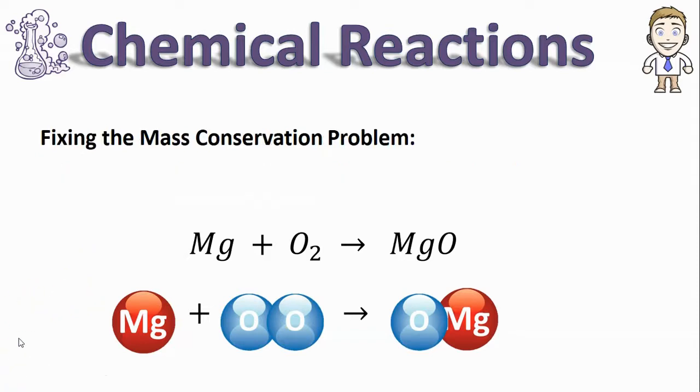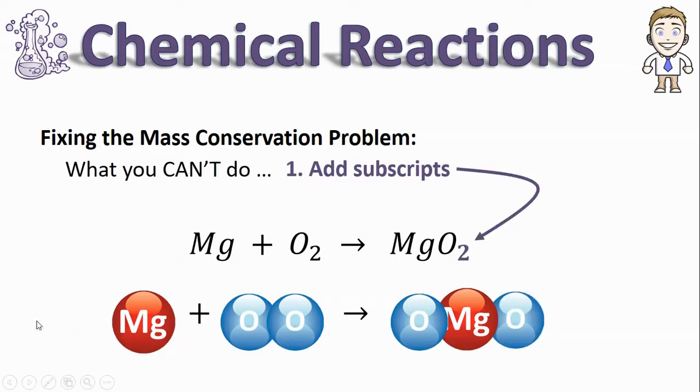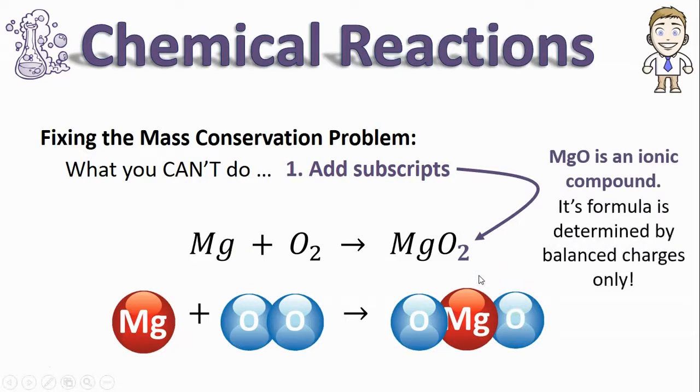So let's talk about some ways we could write this chemical equation that fixes the mass conservation problem. We're going to do this first by talking about ways that you can't fix it. One thing that people try to do a lot is fix the problem by adding in subscripts like what if MgO's formula was MgO2? That would take care of it because there's two oxygens on the left and now there's two oxygens on the right. The only problem is MgO is an ionic compound with a very specific formula.